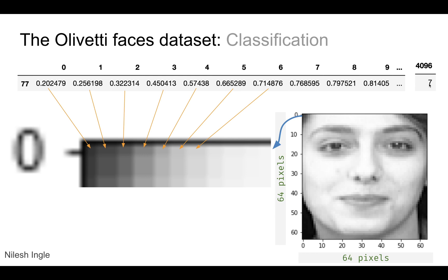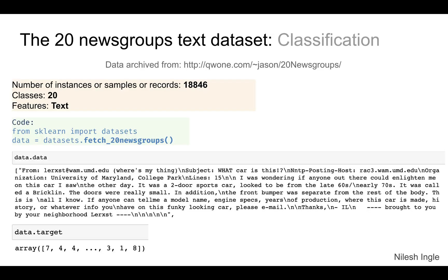Next we have the 20 Newsgroups text dataset. This dataset has about 18,000 records and 20 classes. It can be loaded using `fetch_20newsgroups`. After loading, you get one sample that looks like an email message, and each email is categorized into one of the 20 specific classes.